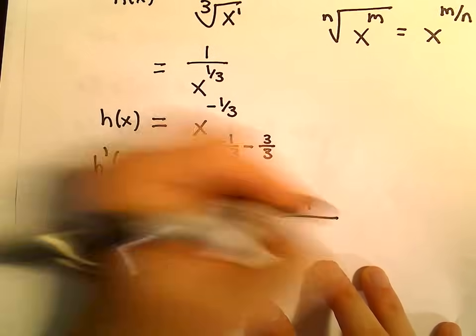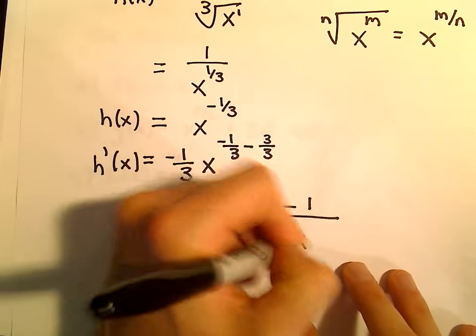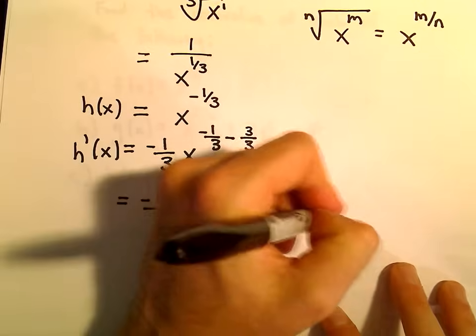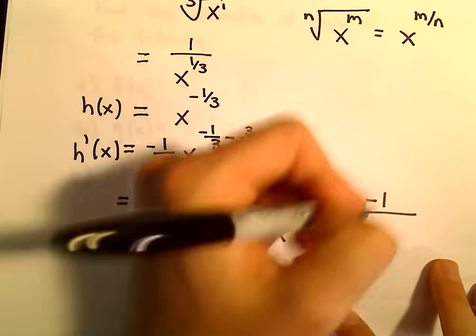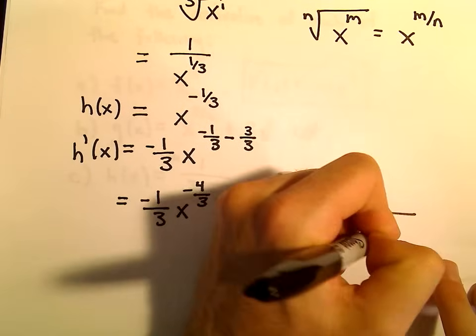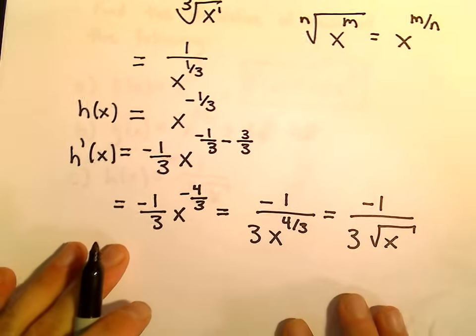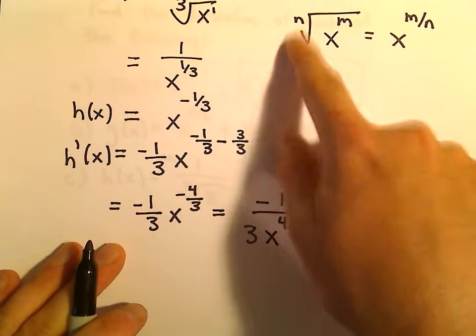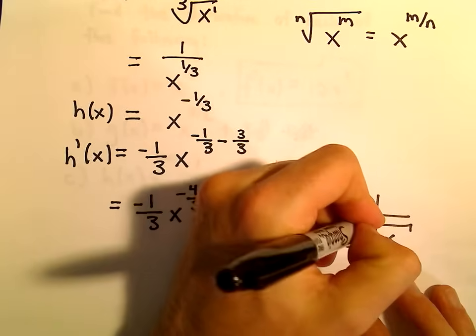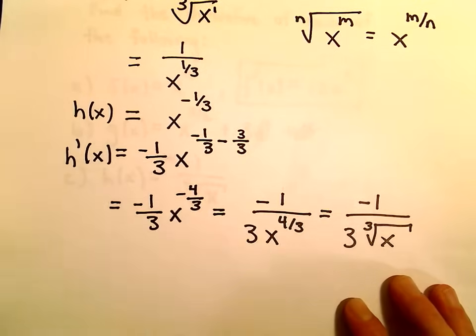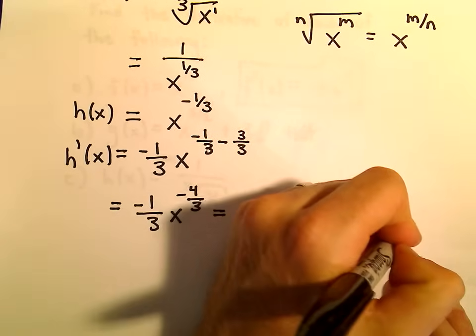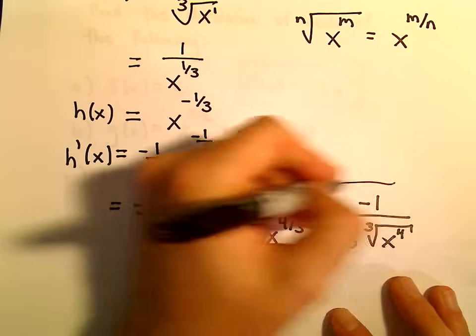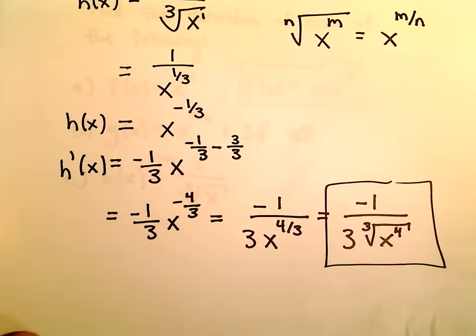We could rewrite this as negative 1 over 3 x to the positive 4 3rds. And if we wanted to, we could even put this back in our radical notation. So kind of using this little rule up here. So it says whatever's in the denominator, that's what the root is. So here we would be taking still a cubed root. But now instead of just having x to the 1st, we would have x to the 4th power. So that's how we could sort of rewrite it all, again, using radical notation.